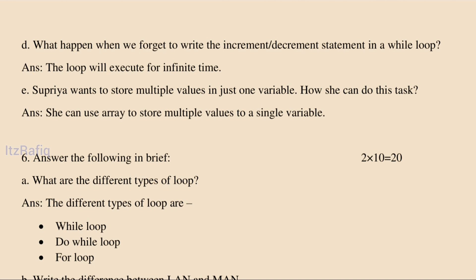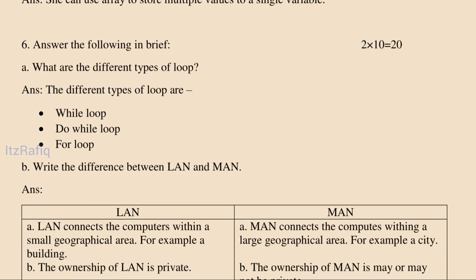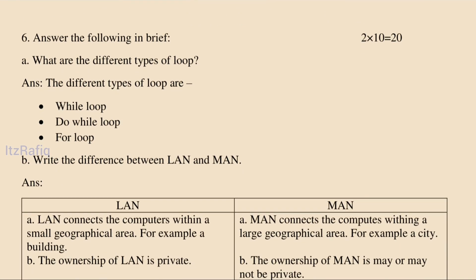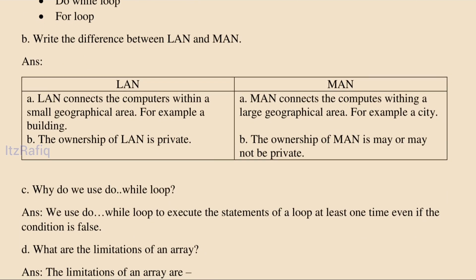Supriya wants to store multiple values in just one variable. How can she do that? She can use an array to store multiple values inside just one variable. The different types of loops are: while loop, do-while loop, and for loop.